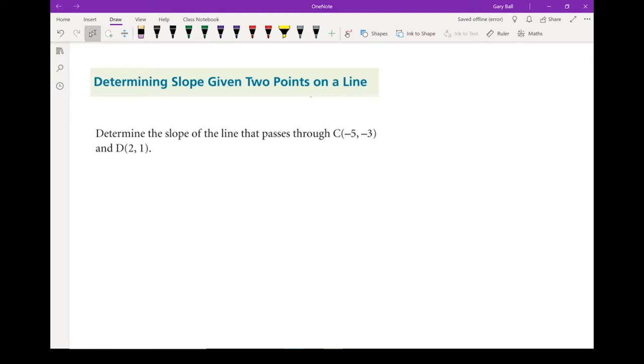Find the slope if you're only given two points on that line. You're given two points: C at (-5, -3) and D at (2, 1).